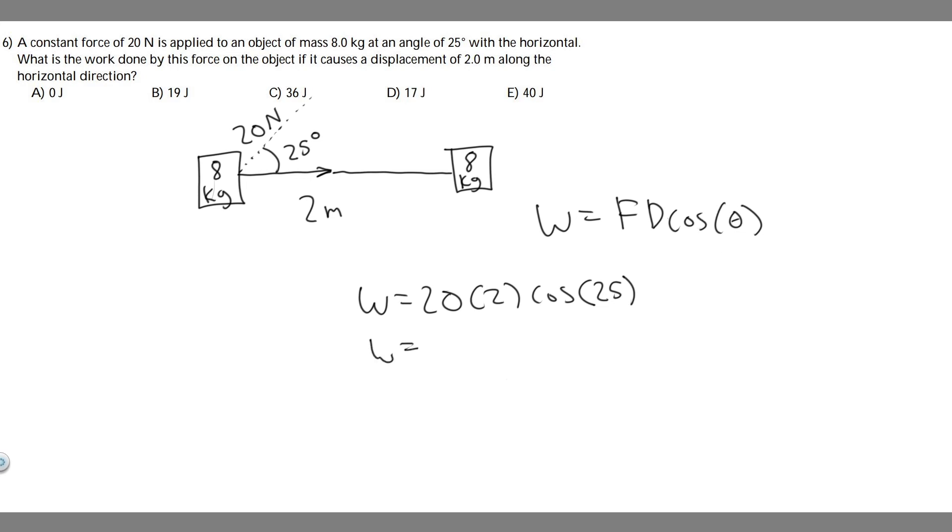So you just want to do 20 times 2 times the cosine of 25. And what you're going to find is it equals 36.25, and so on. I'm just going to round to 36. We measure work in joules. So 36 joules, that's going to be your answer.